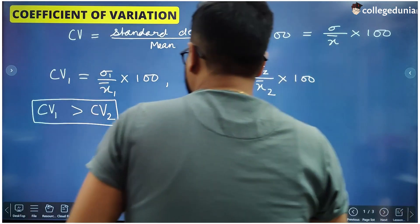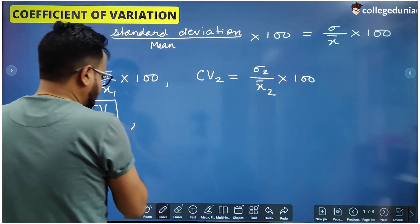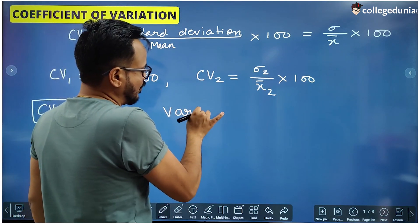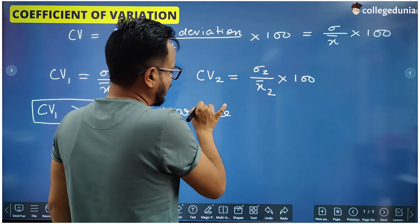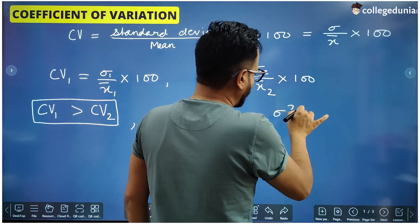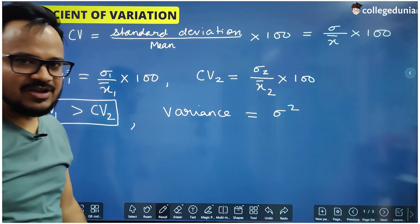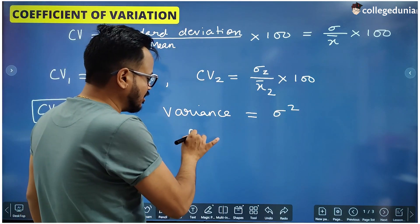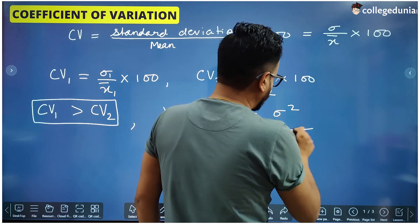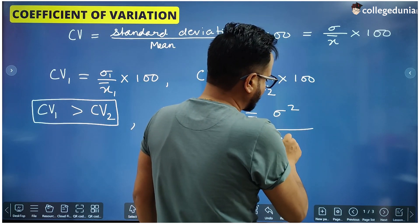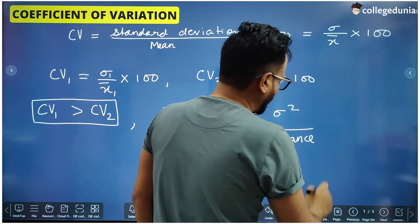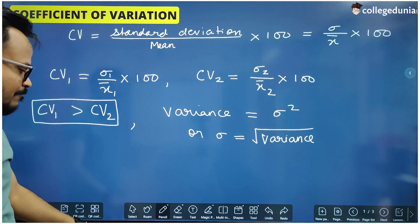What is variance? Variance of a data is the square of the standard deviation. So standard deviation is simply the square root of variance.